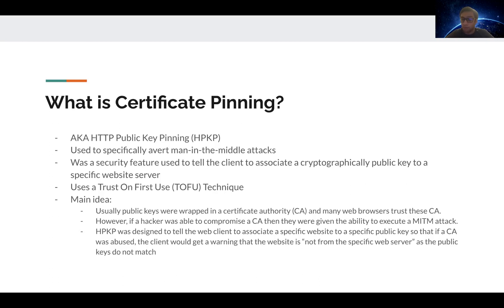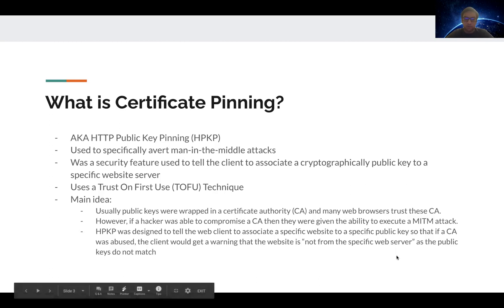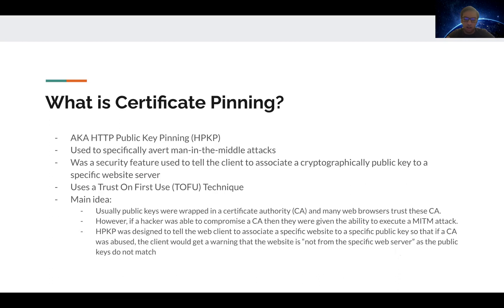However, if a hacker was able to compromise the CA, then they could have access to all the clients trying to connect to it, and the hacker would be able to perform a man-in-the-middle attack. So to avoid this, HPKP was designed as a second measure to prevent all these hacked CAs. It was designed to tell the web client to associate specific website content to a specific public key, so that if a CA was abused or hacked, the client would get a warning saying the public keys did not match.